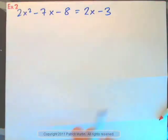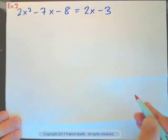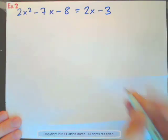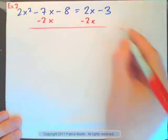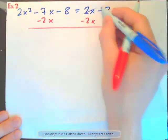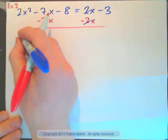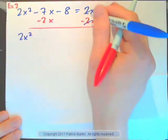So, example 2. Press pause and do it yourself. Now, I'll do it. We need to subtract 2x on both sides. And if I do that, 2x minus 2x is zero. And on the left-hand side, 2x squared. Remember, put it to like terms.